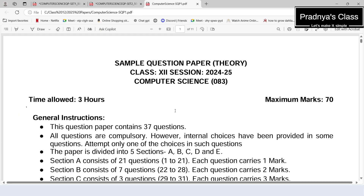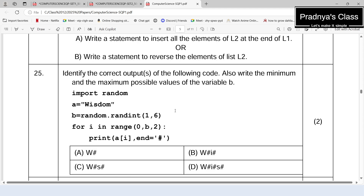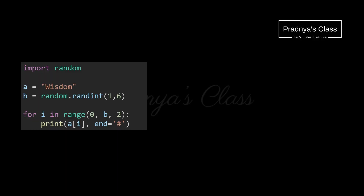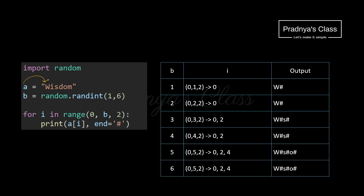Here is the sample paper issued by CBSE for the current session — same 25th question. Variable A is initialized with one string, and B is taking values using the randint function. The possible values of B are 1, 2, 3, 4, 5, 6 — with randint, both limits are inclusive. In the for loop, I is iterating over values from 0 to B with step 2. Using print, we are printing characters from the string based on the value of I, followed by a hash symbol.